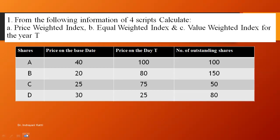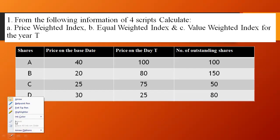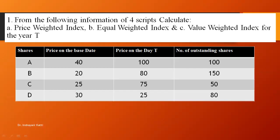What this is all about is: the scripts — that is, number of shares A, B, C, D — four shares are taken into consideration for building the index. We have price on the base date, price on the date T, and number of outstanding shares of all the companies. With these four columns of information, we need to calculate the price weighted index, equal weighted index, and the value weighted index.